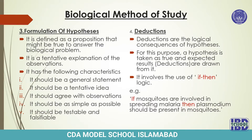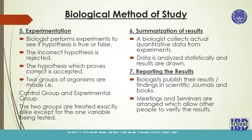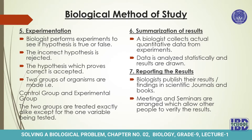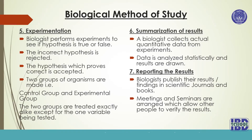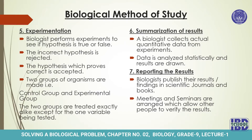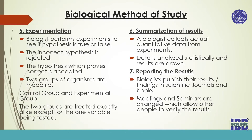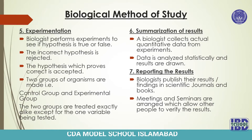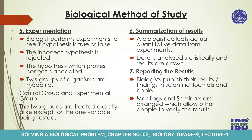The next step is experimentation. Biologists perform experiments to see if the hypothesis is true or false. The incorrect hypothesis is rejected and the one that proves correct is accepted. While doing an experimentation we make two groups of organisms: the first is the control group and the second is the experimental group. A control group includes all the organisms which are provided with all the necessary factors for their better growth. An experimental group is one to which all factors are provided except for the one which is to be tested.